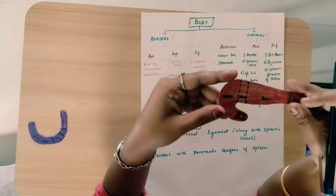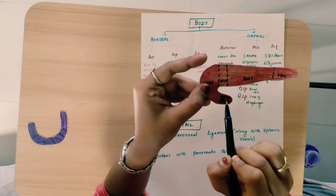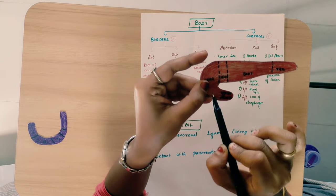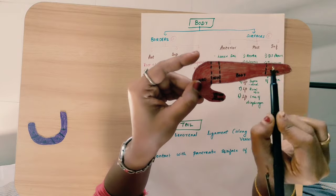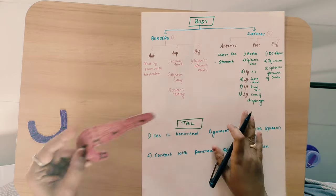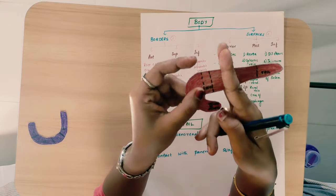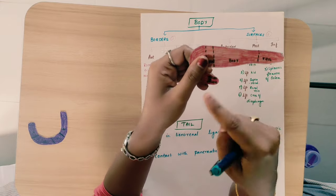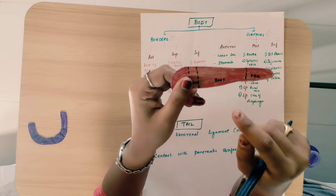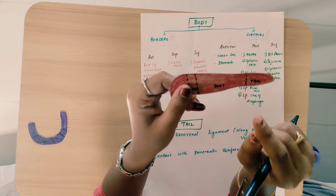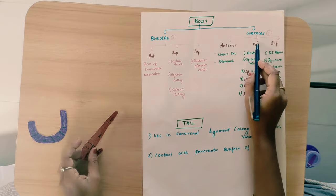Let's get started with the pancreas — head, neck, and uncinate process. Now let's look at the body and tail. If we cut the body in a cross section, it will be in a triangular shape. It is having three borders and three surfaces.